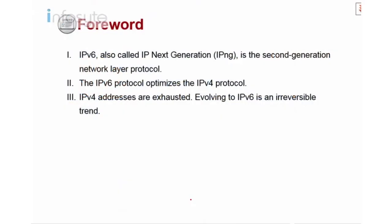So let's look into the overview for today's topic. We are going to focus on IPv6, also called IPNG. NG stands for next generation, so it's a second generation network layer protocol. The first generation is called IPv4 and this is the second generation, IPv6. IPv6 protocol optimizes the IPv4 protocol.